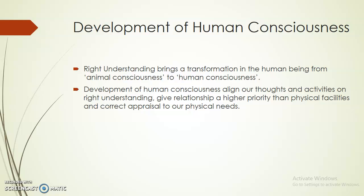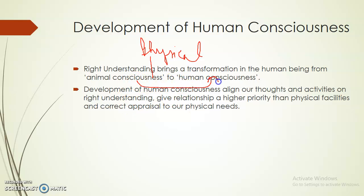Development of human consciousness is achieved through right understanding only — there is no other way. When you have right understanding, you will not keep running towards physical things, because running towards physical things is animal consciousness. With right understanding, you are able to do the correct appraisal of your physical needs. You move from animal consciousness to human consciousness. We must align our activities in the light of right understanding and give priority to relationships over physical facilities.